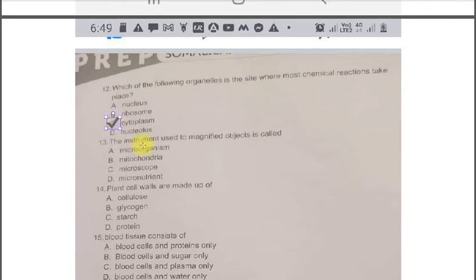The next question. The instrument used to magnify objects is called A. Microorganism. B. Mitochondria. C. Microscope. D. Micronutrient. The correct one is the C. Microscope.